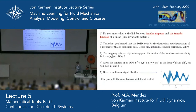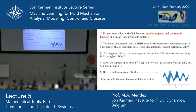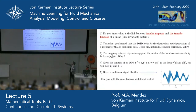Yesterday you learned that the DMD looks for eigenvalues and eigenvectors of a propagator by building it from the data, and these are obviously complex harmonics. Do you understand why? One key step in the algorithm shown yesterday by Professor Mitte was linking the eigenvalues μ_k of the propagator to the terms in the Vandermonde matrix. There is this operation linking continuous and discrete frequencies — how many of you find this obvious?